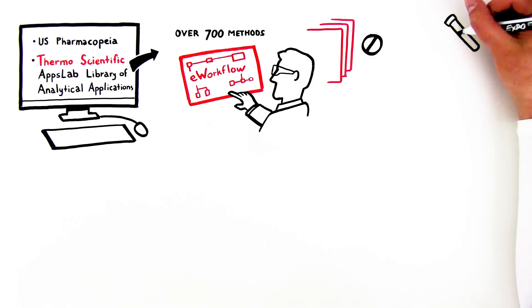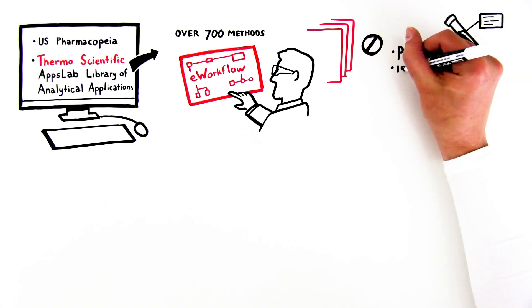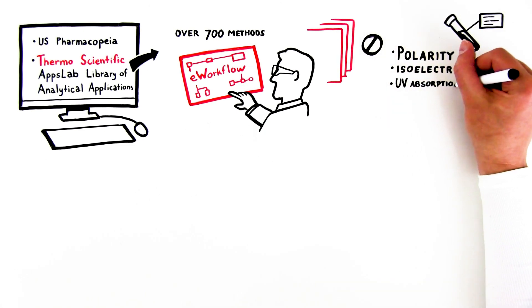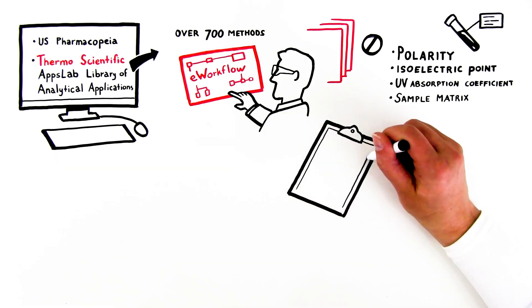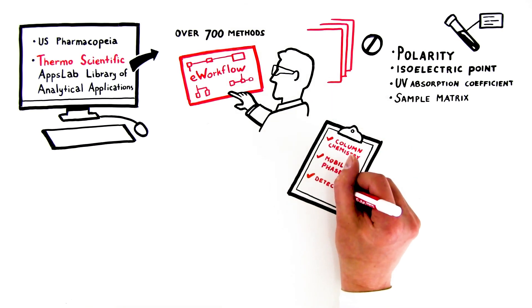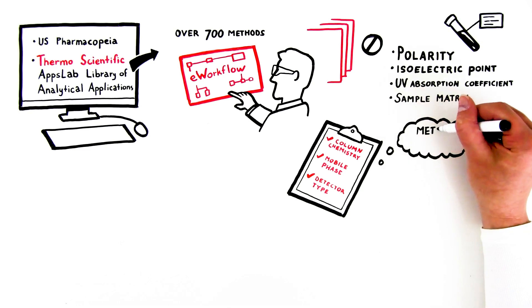study target analyte and sample properties such as polarity, isoelectric point, UV absorption coefficient, and sample matrix. This helps you make informed decisions about column chemistry, mobile phase, and detector type during method scouting, which is the next step.